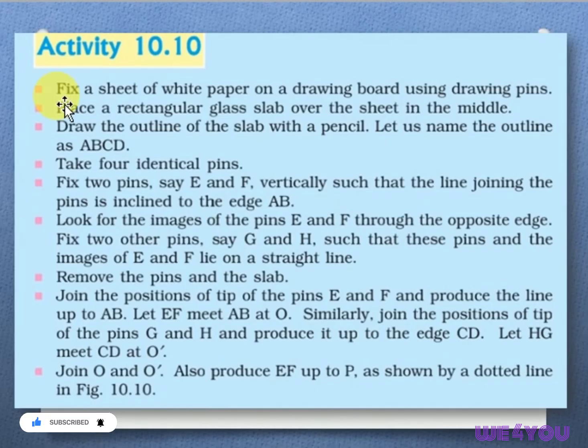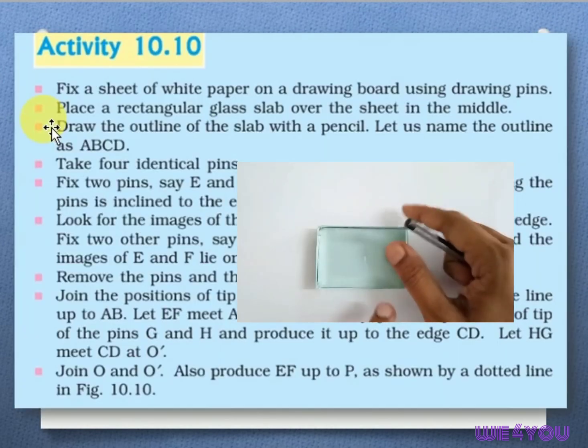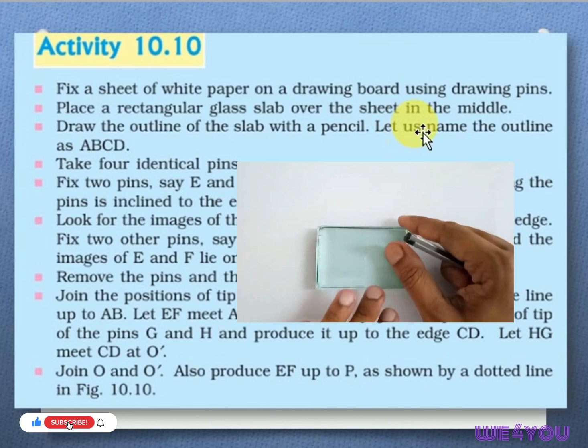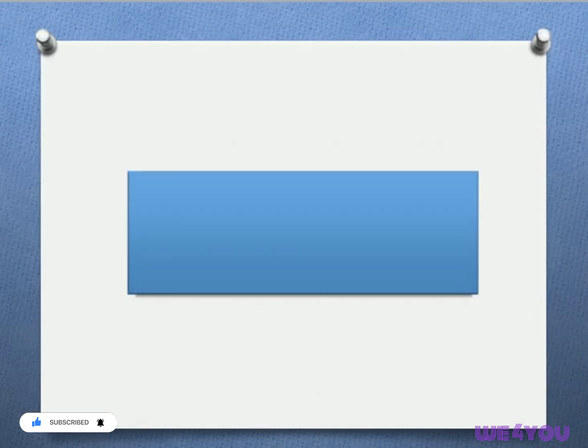First of all, we have to fix a sheet of white paper on a drawing board using drawing pins. Now, place a rectangular glass slab over the sheet in the middle. We have to take the glass slab and put it on the paper sheet in the middle.